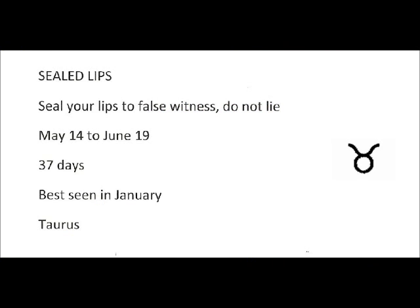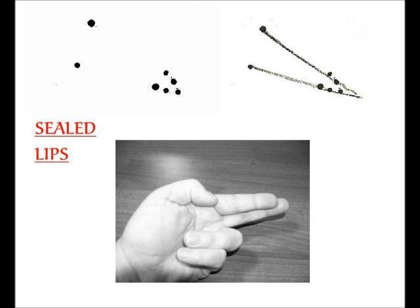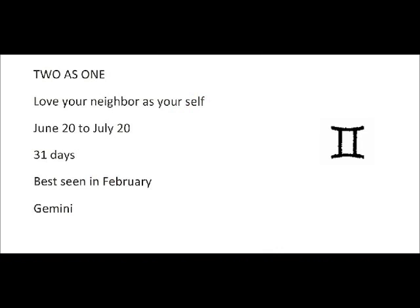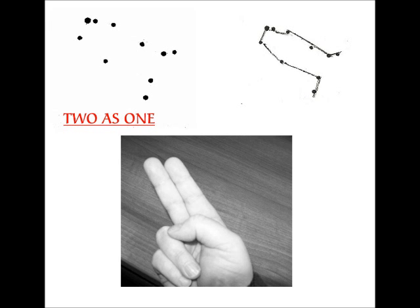Seal lips. Seal your lips to false witness. Do not lie. May 14th to June 19th. Duration is 27 days. Best seen in January. Formerly known as Taurus. Love your neighbor as yourself. June 20th to July 20th. Duration is 31 days. Best seen in February. Formerly known as Gemini.